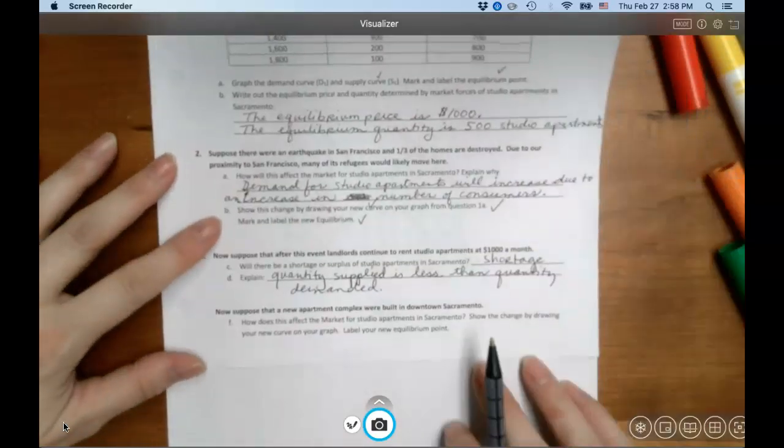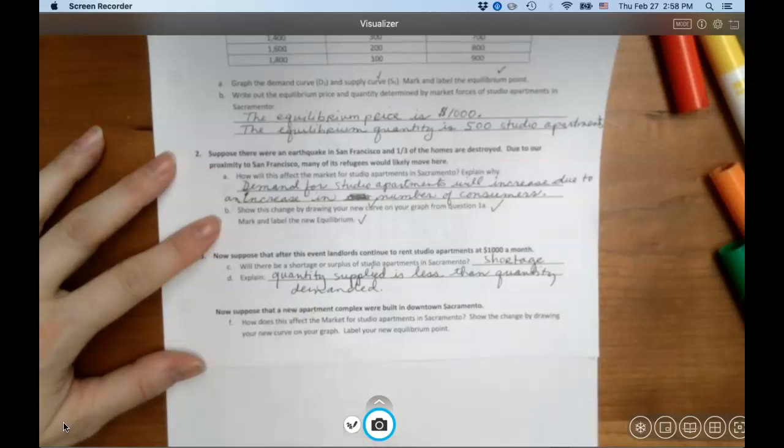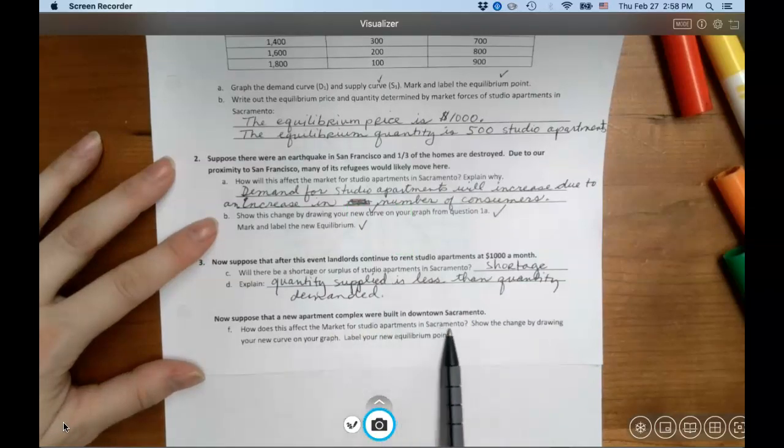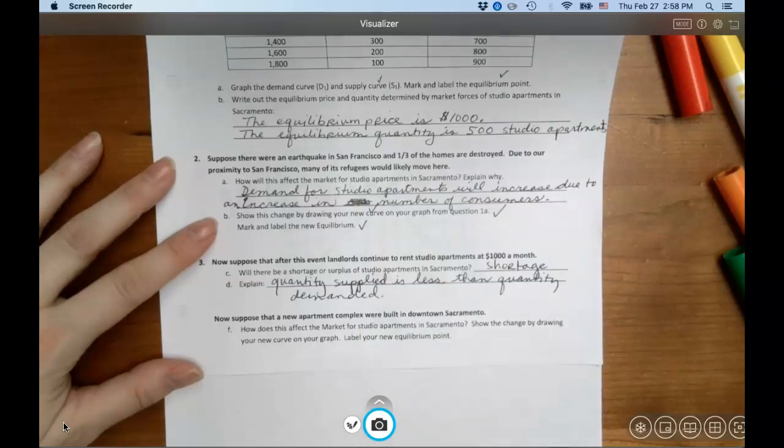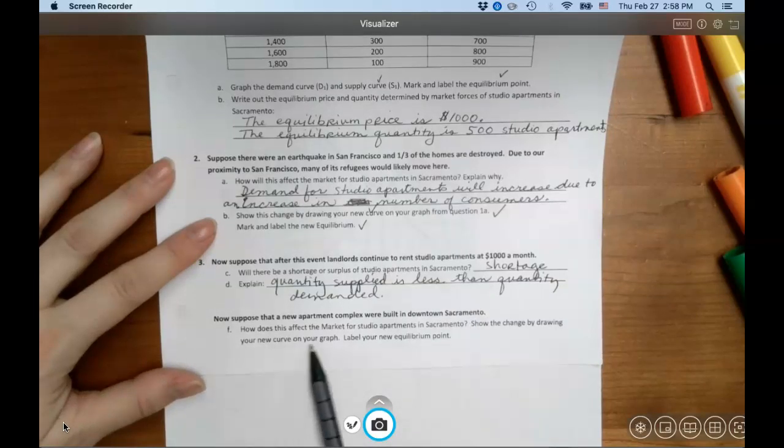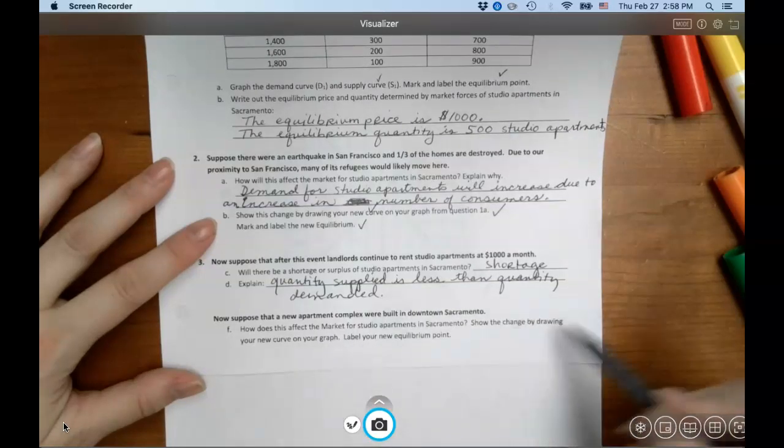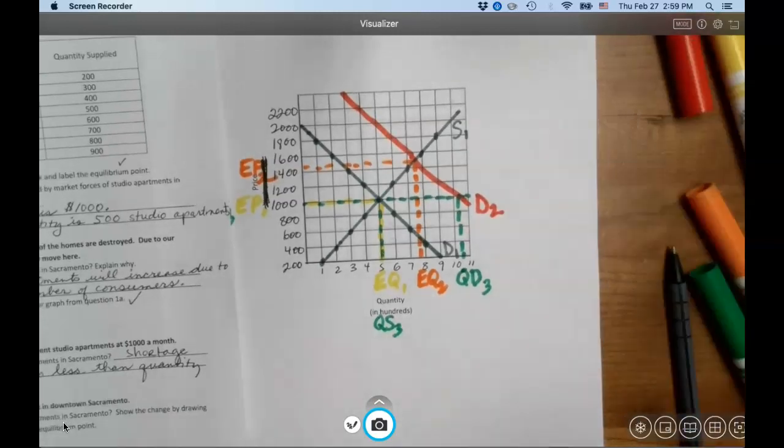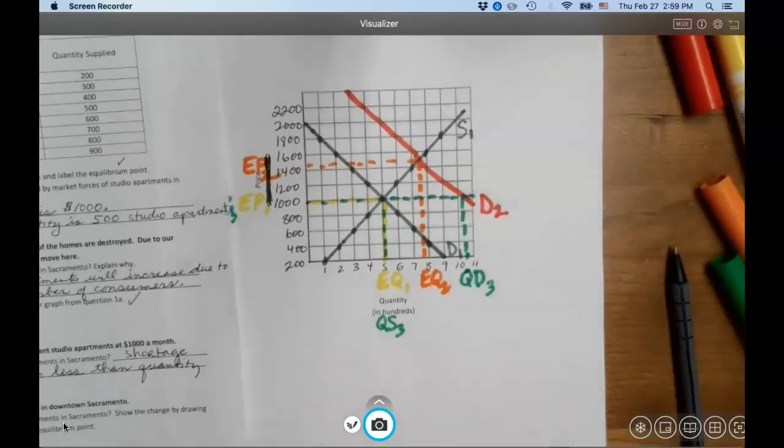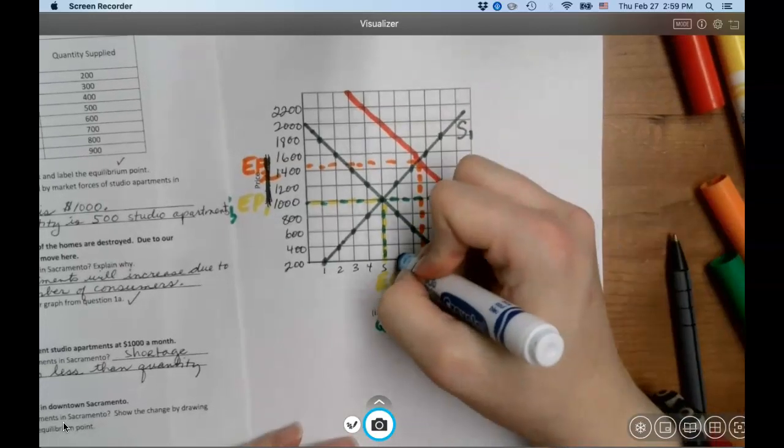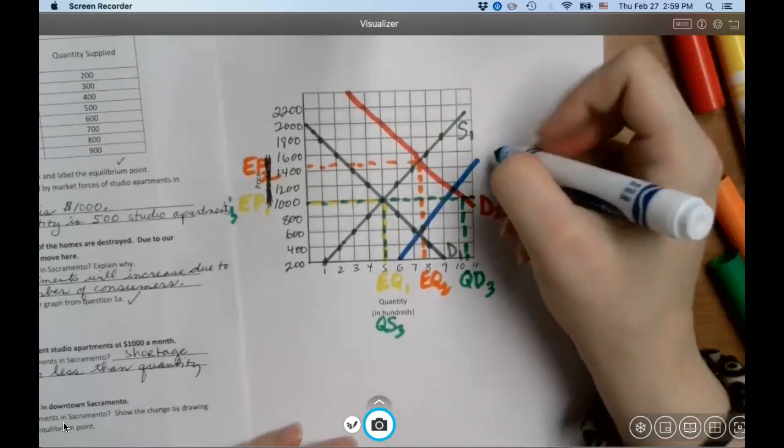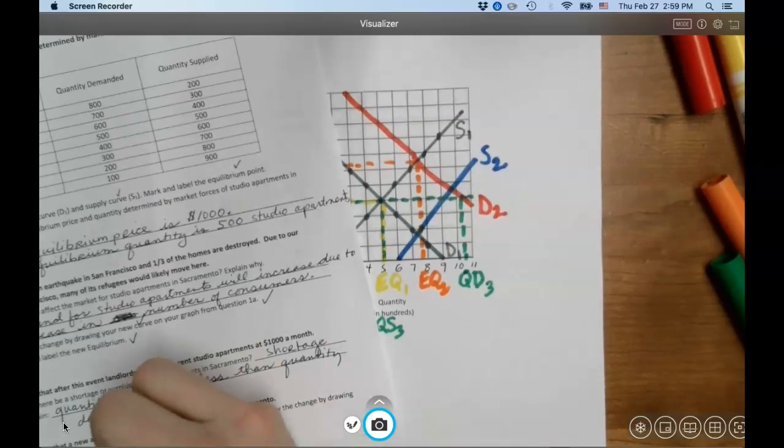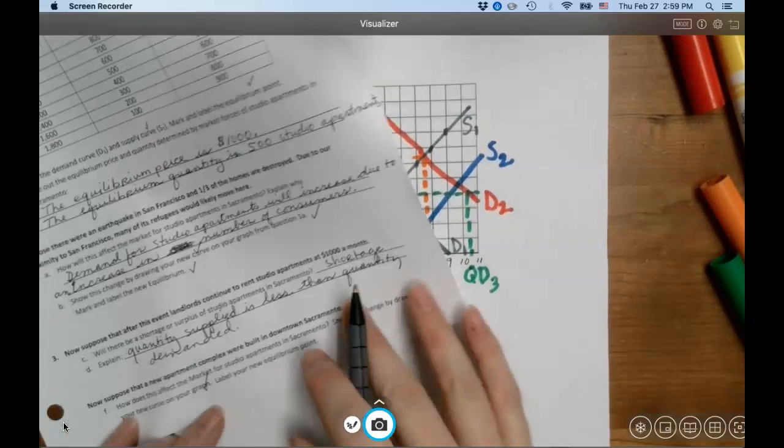Last one. Last step. Now, suppose that a new apartment complex were built in downtown Sacramento. How does this affect the market for studio apartments in Sacramento? Is that a supply thing or a demand thing? Show the change by drawing your new curve on the graph. And label your new equilibrium points. So, go through, check by check. Give yourself a check mark that you got it done as you go. So, how does this affect the market for studio apartments? It affects supply. And what does it do? Increase or decrease supply? It increases supply. So, here we go. Here's my new supply curve. Label it what? Now, check mark I did that. Show the change by drawing a new curve on the graph. I drew the curve. I gave it a label. Label your new equilibrium points.